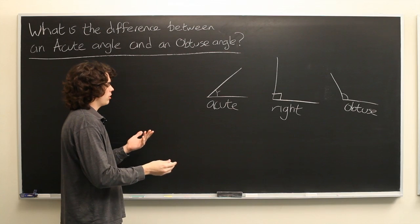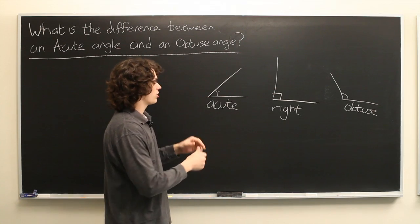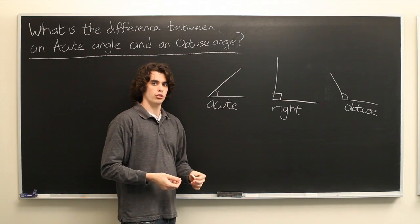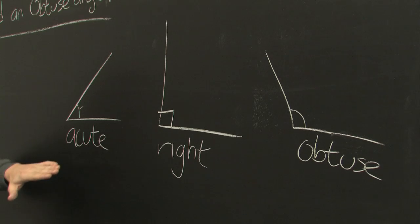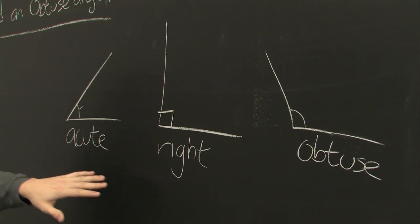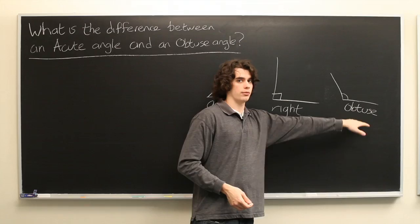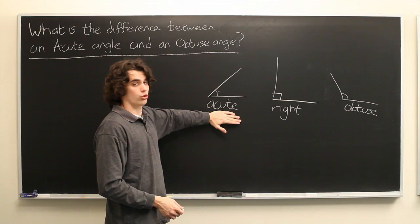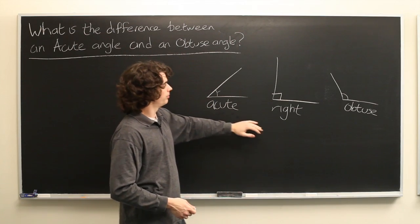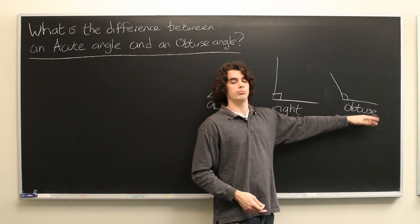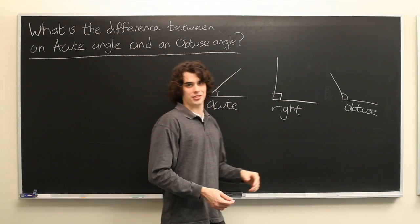But sometimes it can be kind of confusing when you have similar sounding words used to describe opposite conditions. The way that I like to remember is that acute is five letters, obtuse is six letters. Acute is the shorter word used for the smaller angle. Obtuse, the longer word, is used for the larger angle. And it's just that simple.